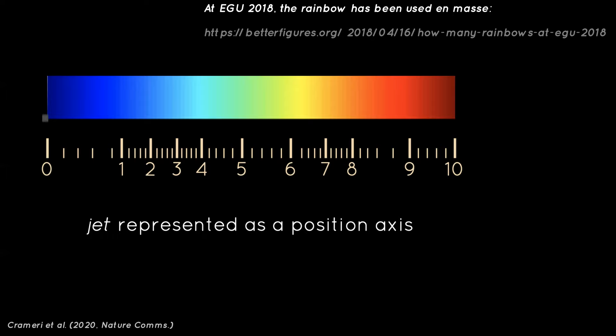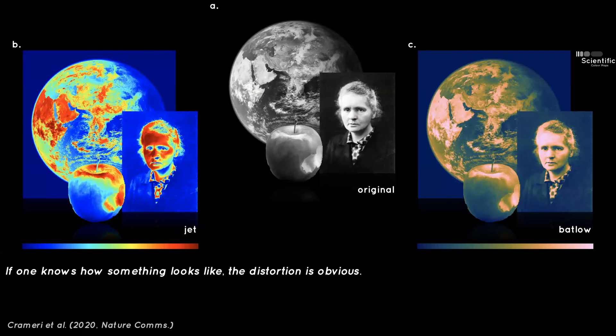At ETH in 2018 we counted that more than 64% of all posters used a rainbow color map to present their data. The rainbow color map, represented as a position axis, is deeply distorting. The distortion only becomes clear when you know what the original picture looks like. For example, looking at colored images of an apple, Mercury, and the Earth — the rainbow-colored version versus the scientific Batlow color map version, which is perceptually uniform and non-distorting, makes the distortion very apparent.